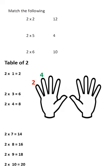2, 4, 6, 8, 10, 12, 14, 16, 18, 20. Okay? So, 2 ones are 2, 2 twos are 4, 2 threes are 6, 2 fours are 8, 2 fives are 10, 2 sixes are 12, 2 sevens are 14, 2 eights are 16, 2 nines are 18, 2 tens are 20.